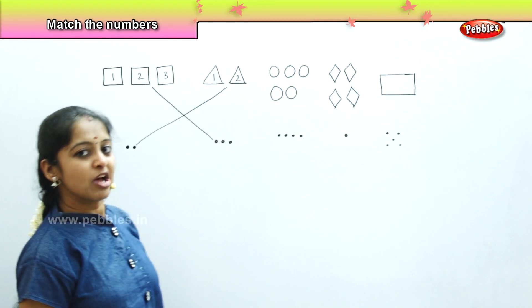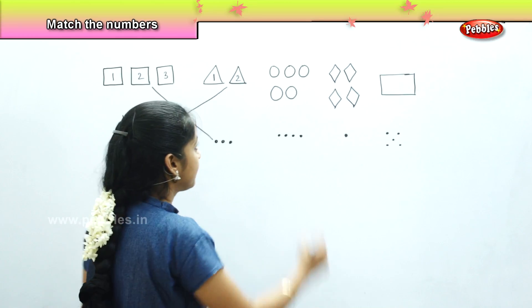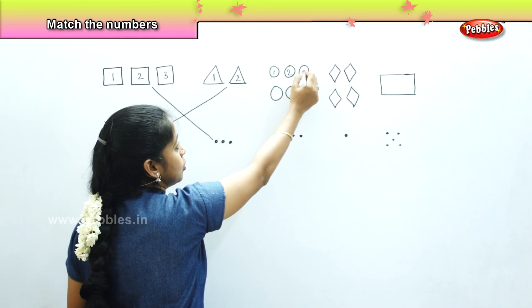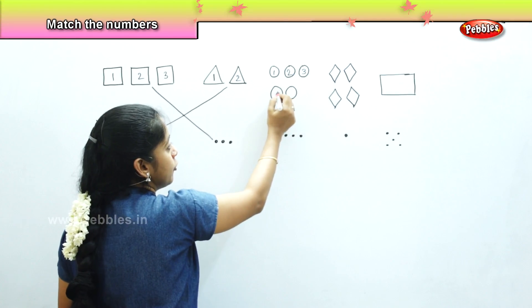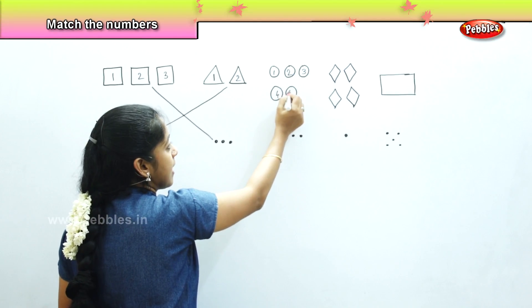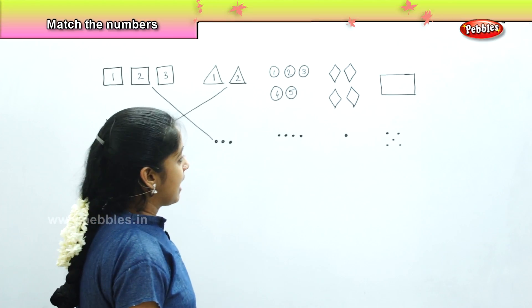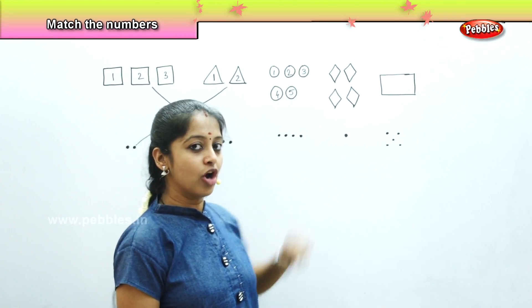Now, coming to the circles. How many circles can you find? It's 1, 2, 3, 4 and 5. There are 5 circles. And where can we find the 5 dots?